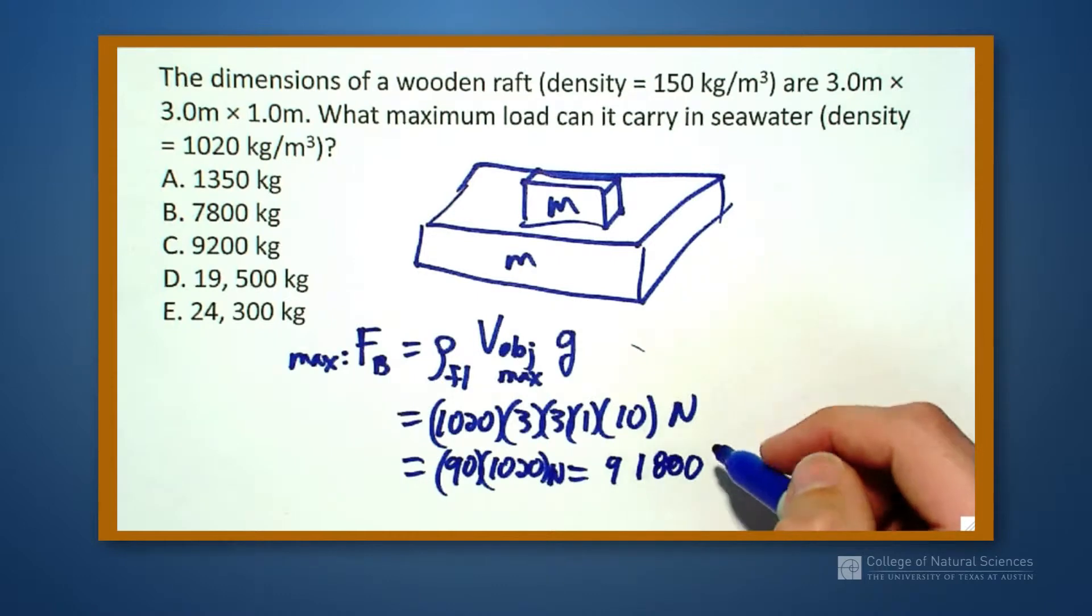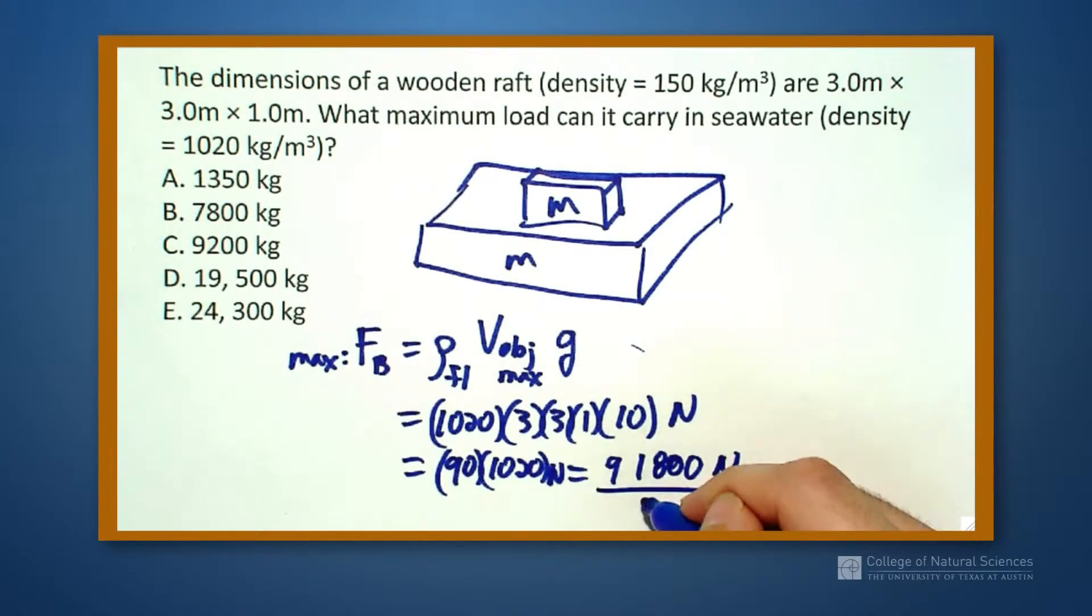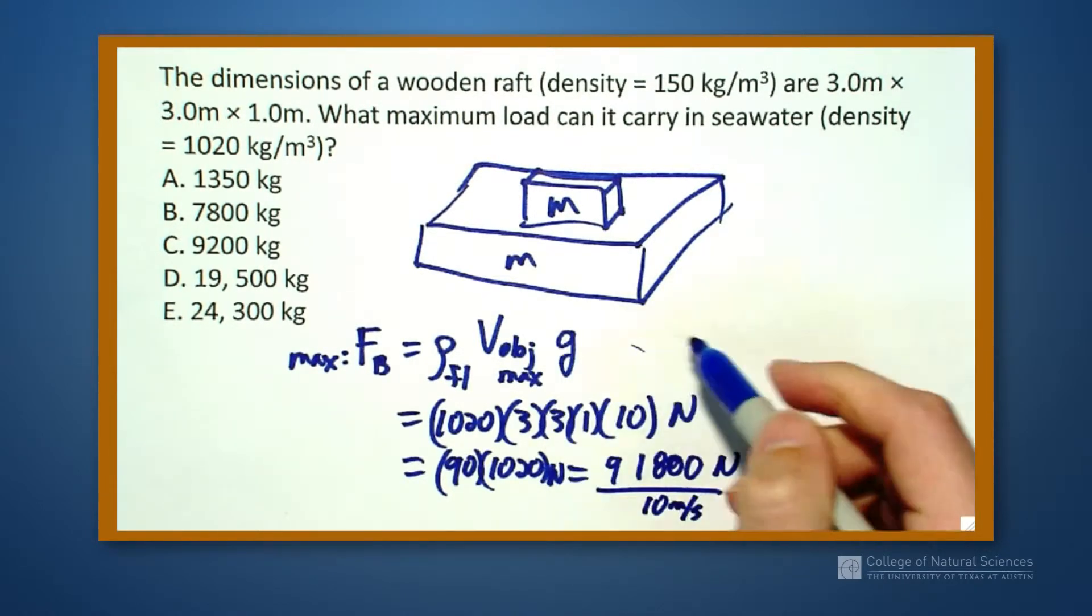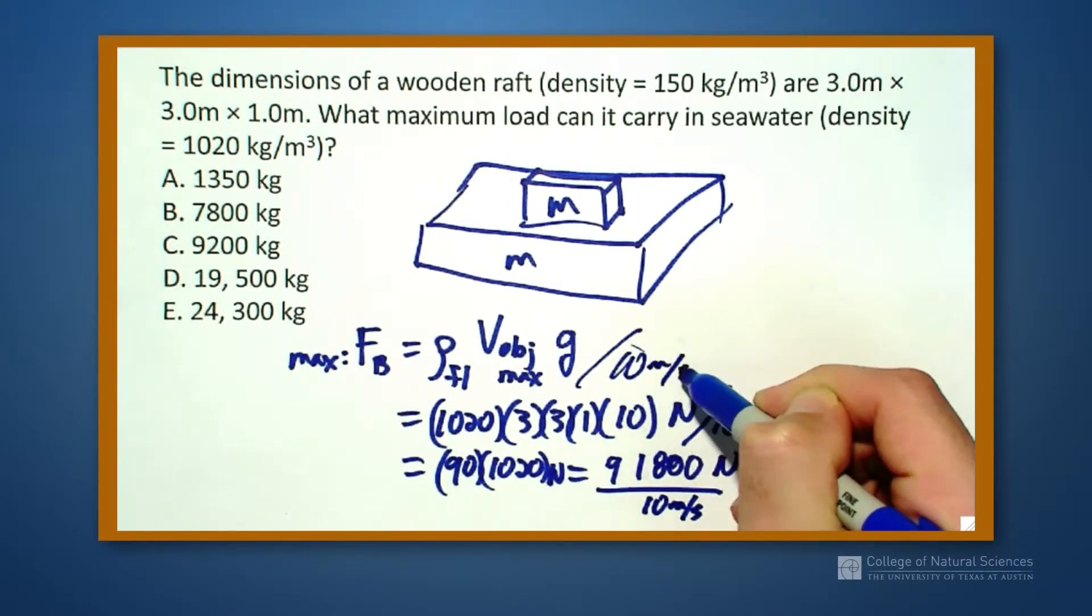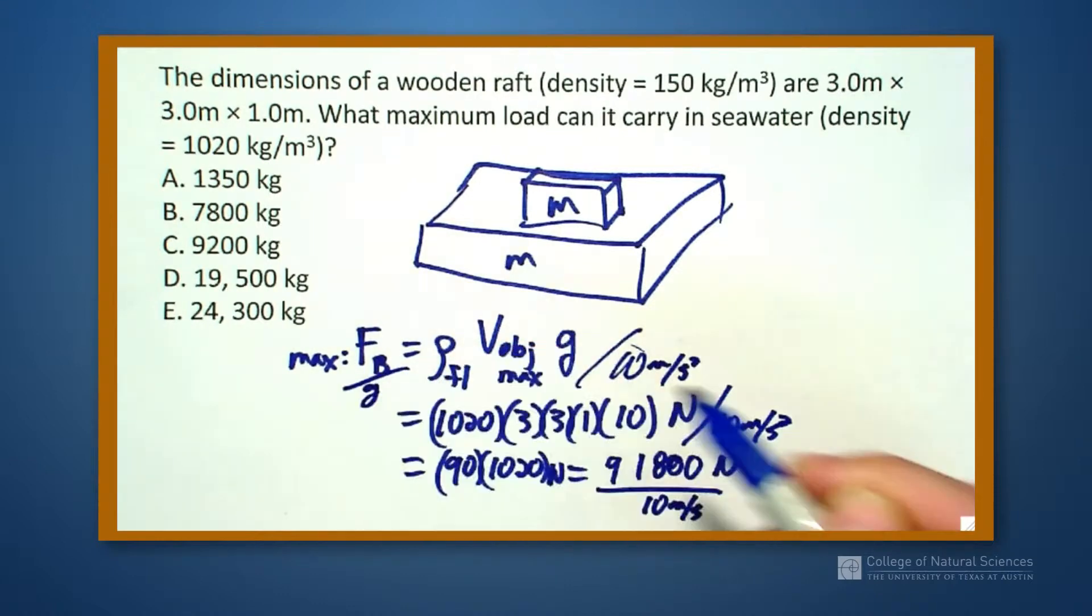91,800 newtons. That's a lot. If I divide this by g, by the 10 meters per second squared, so dividing everything by 10 meters per second squared, which will give me a value of 9,180 kilograms that this thing can support.